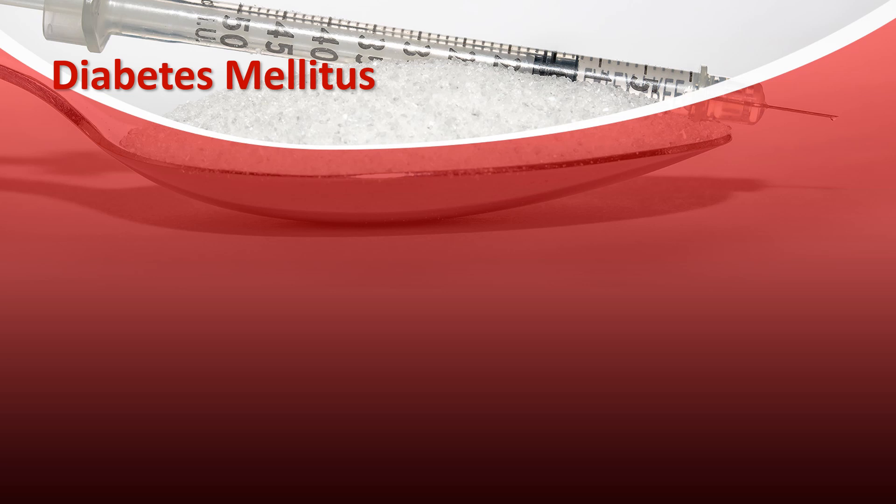If diabetes is not controlled, people have major complications that could include amputations, blindness, kidney failure, heart attacks, and it could potentially turn into life-threatening complications. It's actually the eighth leading cause of death in America, and they think that might be underreported.